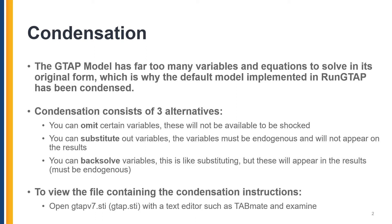Condensation consists of three alternatives. You can omit certain variables — these will not be available to be shocked. You can substitute out variables; they must be endogenous and will not appear in the results. Or you can back-solve these variables, which is like substituting, but you will still see them in the results.